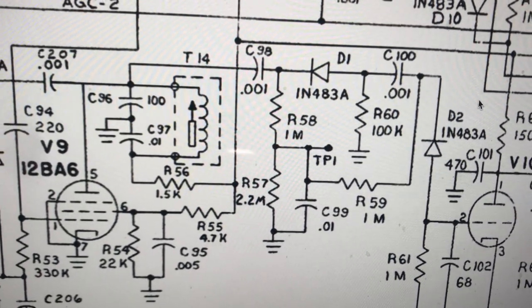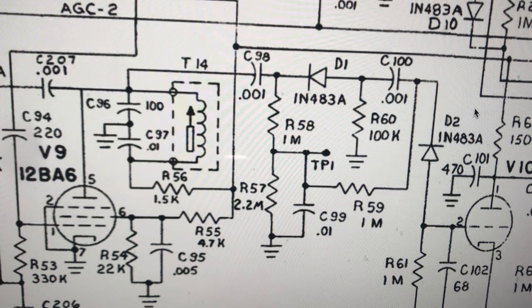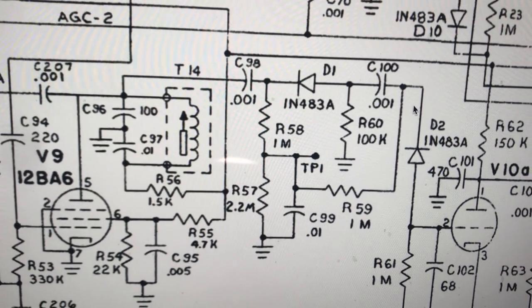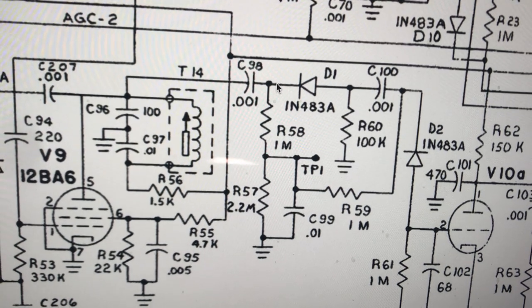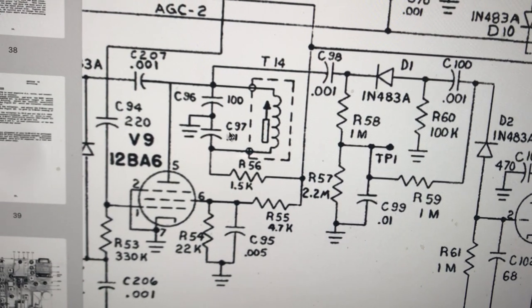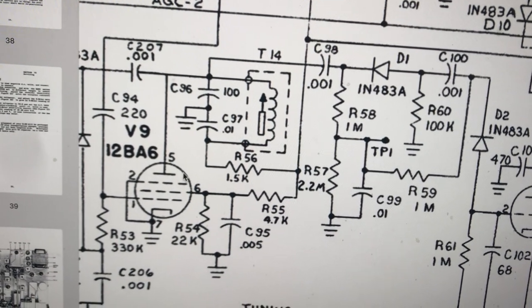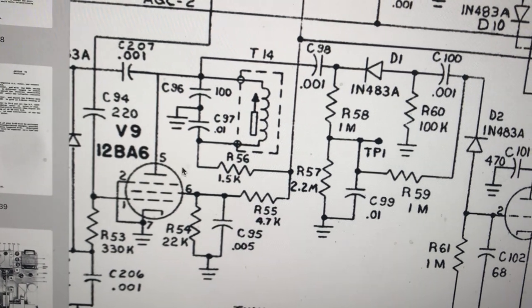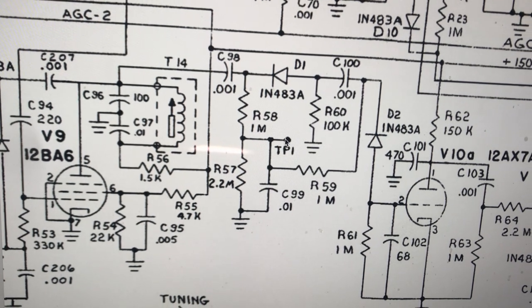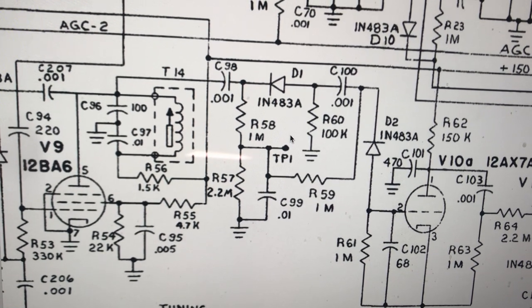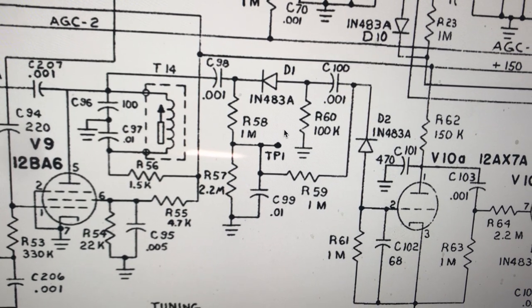I'm still trying to figure out the noise blanker on this Drake R4B and I've been looking at the signal here which comes off this tube, V9 12BA6. They call this the noise amplifier. This is also where test point one is to do your calibration, which is usually a negative voltage.